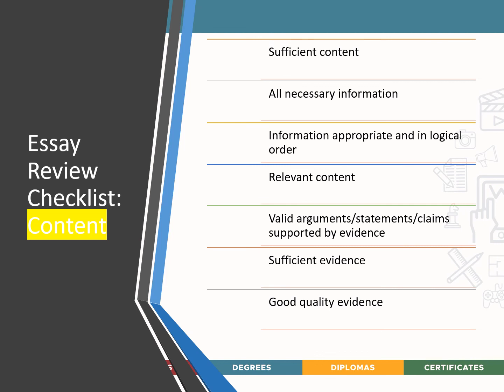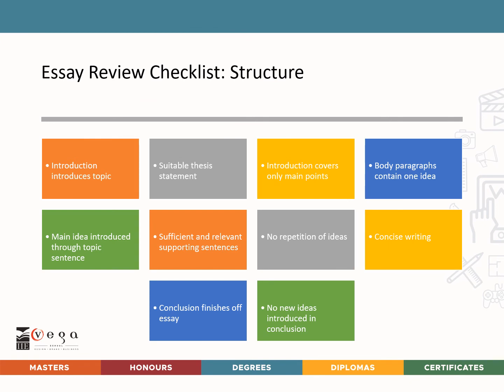The next checklist checks your editorial aspects — your structure. Make sure that your introduction introduces the topic, that your problem statement is suitable to what you are trying to write, that you have covered the main points, that each paragraph only includes one idea, that you don't have repetition of ideas, that your writing flows, that your conclusion finishes off properly, and that no new ideas are introduced in your conclusion.